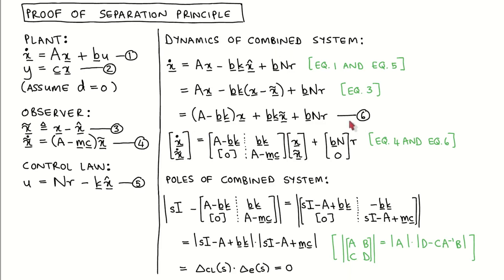We now combine equation six and equation four into a single matrix equation, where equation six forms the first line and equation four forms the second line. We write the derivative of the full state vector as a square matrix times the full state vector, plus a column vector times the input to the full system. This is the standard state equation format, with this being the A matrix and this being the B vector of the full system.